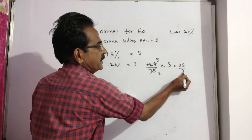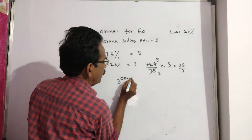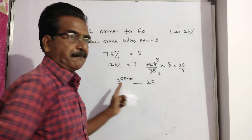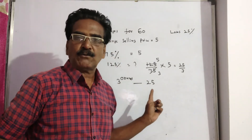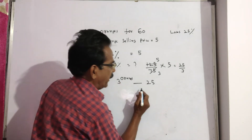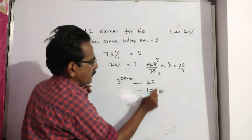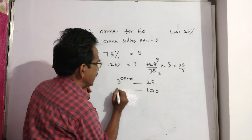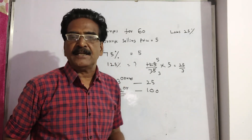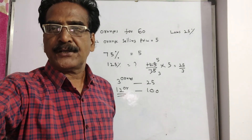That means 3 oranges for rupees 25. At this price we gain 25 percent. So for rupees 100, that is 4 times 25, we need 4 × 3 = 12 oranges. He has to sell 12 oranges for rupees 100 to gain 25 percent. Okay friends, thank you.